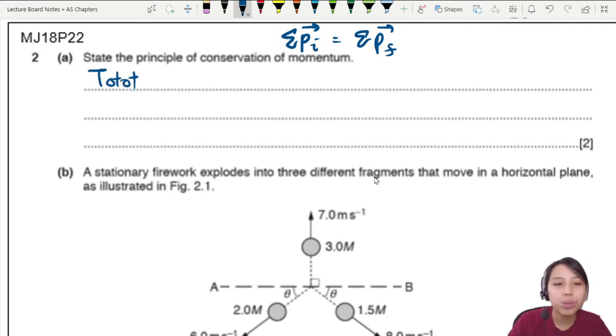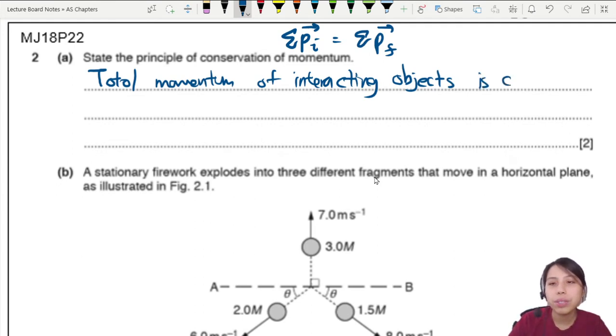So we're gonna write that as total momentum must include the word total. What am I writing? Total momentum of interacting objects can be a collision, can be an explosion. I'm just gonna call this interactions. So total momentum of interacting objects is constant or is conserved. There's no change.